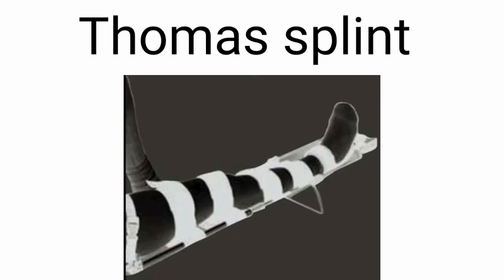An example of fixed traction is the Thomas splint. In this type of traction, the forward pull force is directly applied on the splint. Fixed traction is used less frequently than balanced traction.